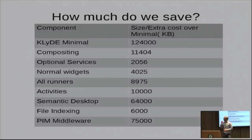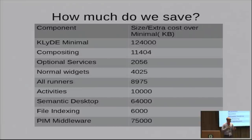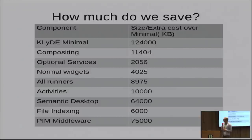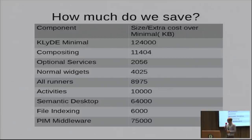How much can we actually save? From cutting back on all these features, I've got a figure of about 124 megabytes of memory for all user processes in the KDE session. The big things are Akonadi — the PIM middleware — at 75 megabytes, just at startup with no accounts. The semantic desktop database consumes 64 megabytes at runtime. Activities take about 10 MB, compositing about 11 MB, and the other things are all under 10 megabytes.